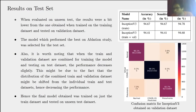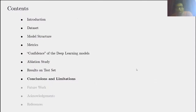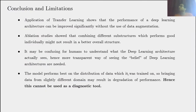In conclusion, transfer learning shows that deep learning architecture performance can be improved significantly without data augmentation. This is important because for medical data, we cannot use data augmentation without referring to proper methods. Through ablation studies, we showed that combining different substructures that individually perform well might not result in better overall performance. Finally, the model performs best on data distributions similar to its training set, so bringing data from a slightly different domain may degrade performance. This is why we should not use this as a diagnostic tool.